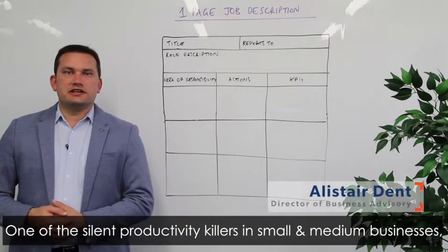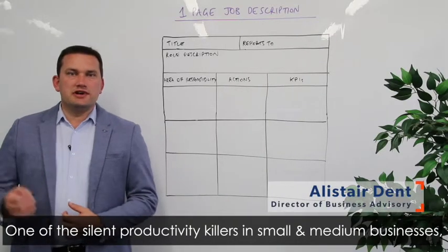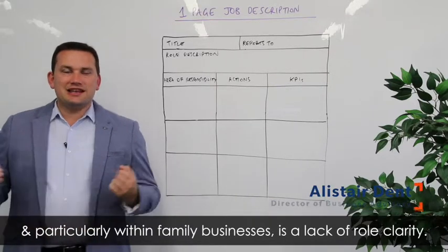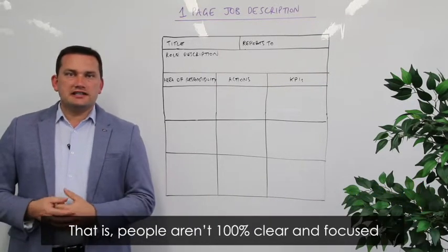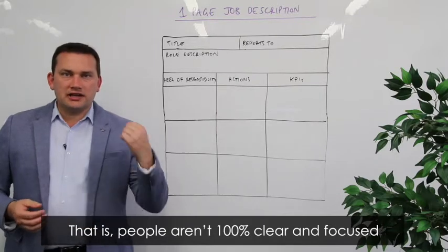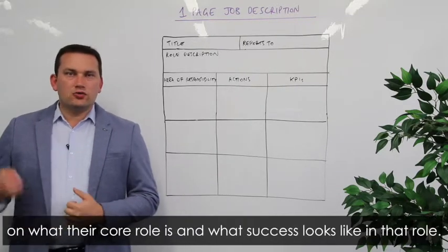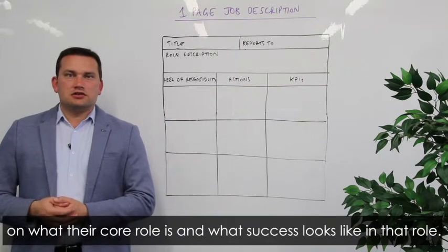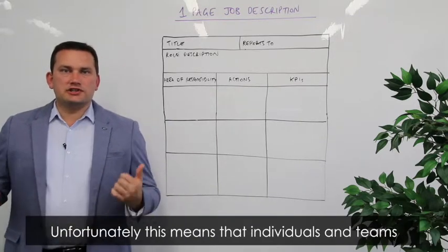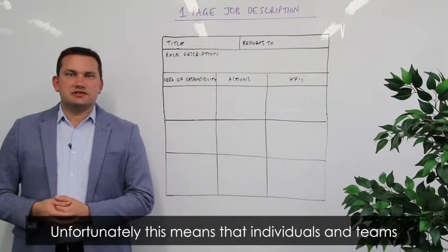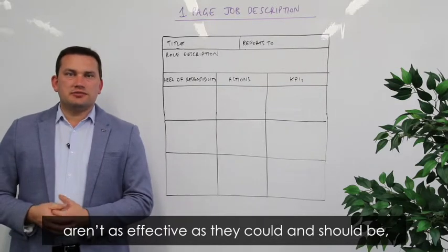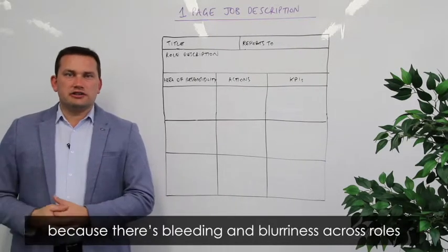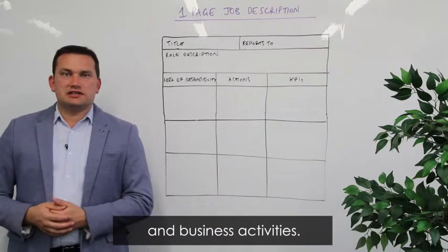One of the silent productivity killers in small and medium businesses, and in particular within family businesses, is a lack of role clarity. That is, people aren't 100% clear and focused on what their core role is and what success looks like within that role. Unfortunately, this means that individuals and teams aren't as effective as they could and perhaps should be, because there's bleeding and blurriness across roles and business activities.